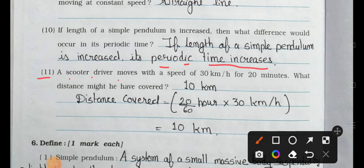Question number 11: a scooter driver moves with a speed of 30 kilometer per hour for 20 minutes. What distance might he have covered? So distance covered is equal to 20/60 hour multiply by 30 kilometer per hour, so we get 10 kilometer.